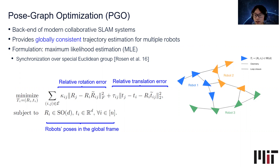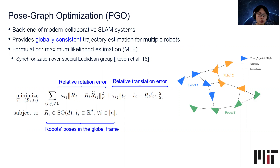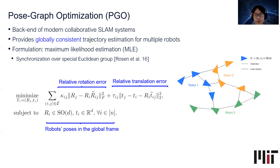On this slide, I'm showing a three-robot toy example of PGO. The goal is to collaboratively estimate the trajectories of all three robots in a global frame given relative pose measurements. This problem can be written as the optimization problem on the left, where the decision variables contain the robots' poses in the global frame, and the robots minimize a joint cost function consisting of two groups of terms: relative rotation errors and relative translation errors.